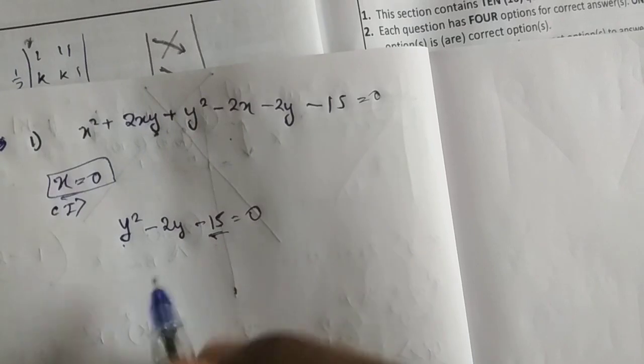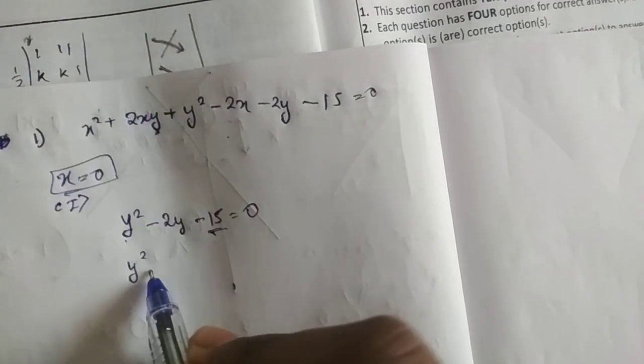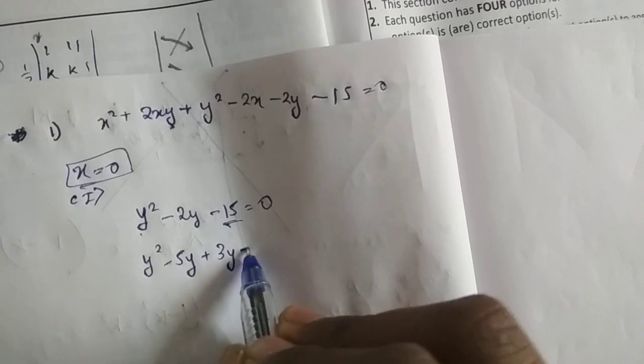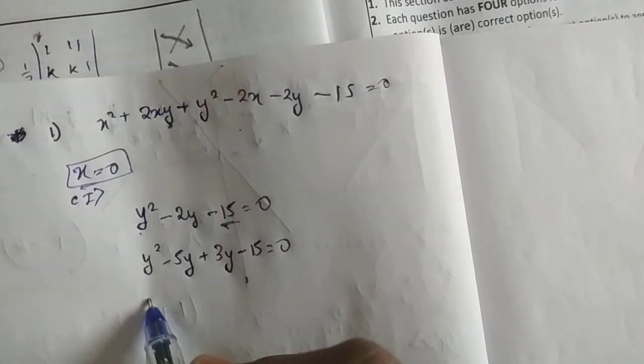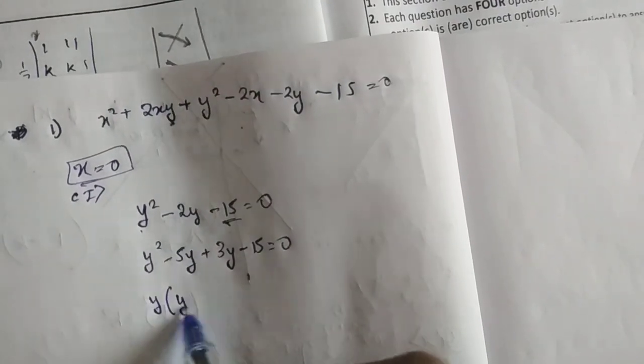y square minus 5y plus 3y minus 15 equals to 0. y(y minus 5) plus 3(y minus 5) equals to 0.